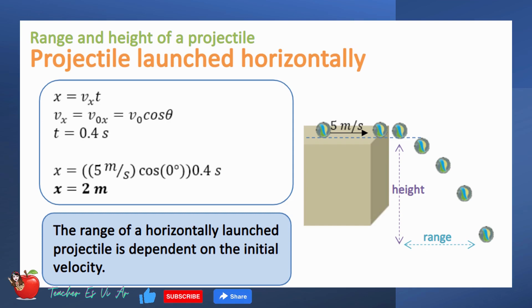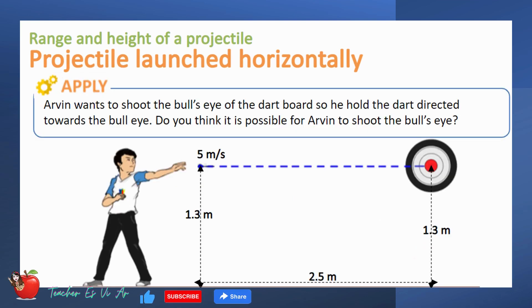The range of a horizontally projectile is dependent on the initial velocity. Let's try to apply what we have learned so far. Arvin wants to shoot the bullseye of the dart board, so he holds the dart directed towards the bull's eye. Do you think it is possible for Arvin to shoot the bull's eye?